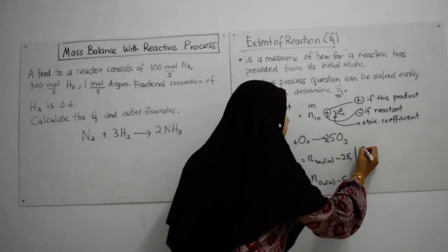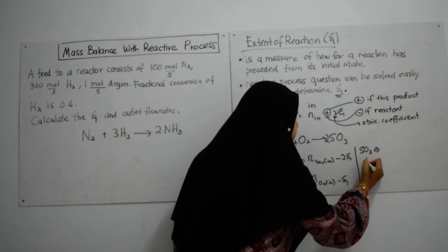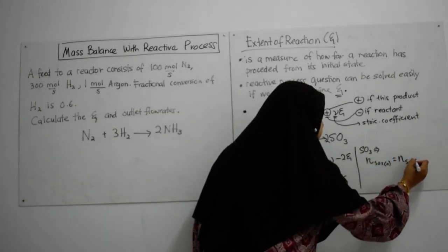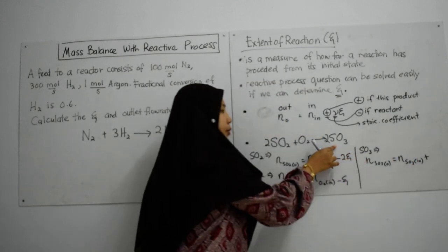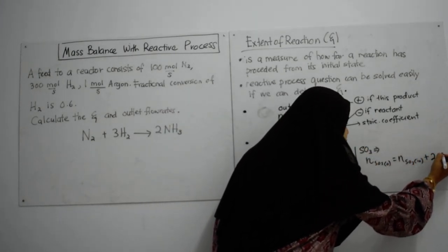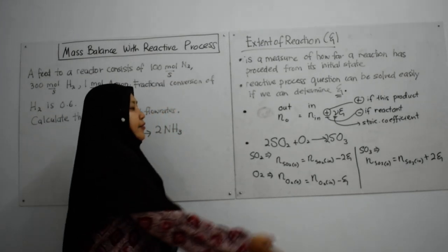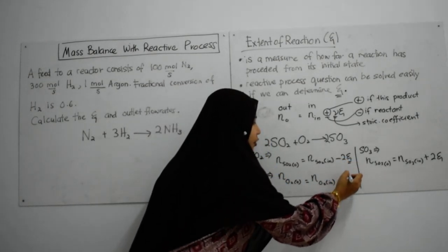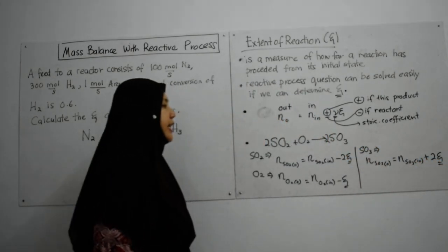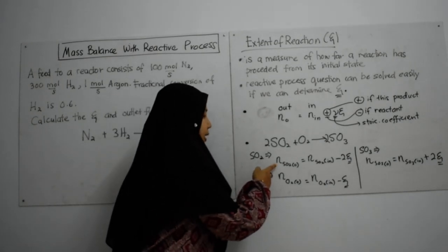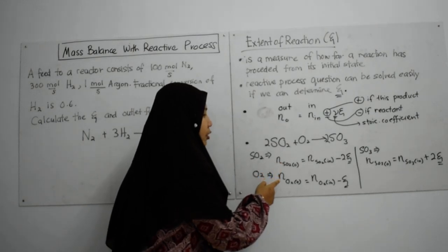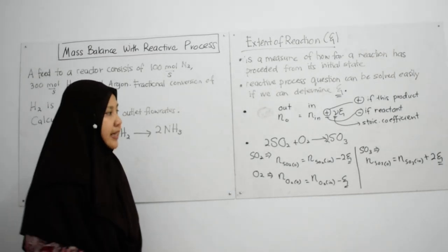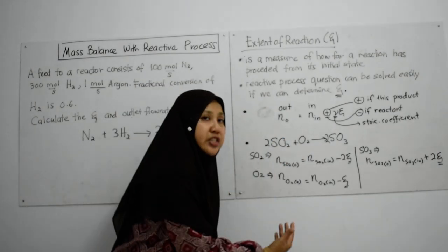For SO3, the extent of reaction equation for SO3 is n SO3 out equal to n SO3 in plus, because SO3 is a product so it becomes plus, plus 2 extent of reaction. If you have complete information, you actually can find extent of reaction for this process and then finally you can determine the outlet flow rate or any information related to this question.